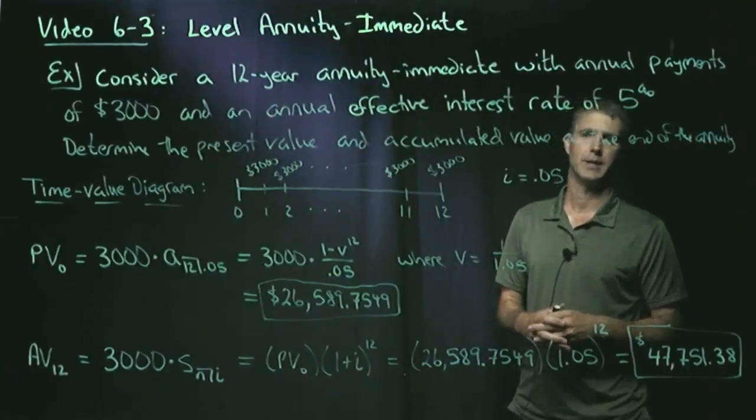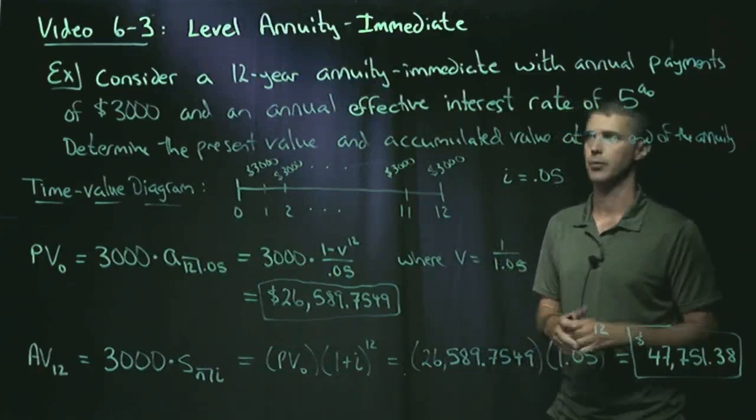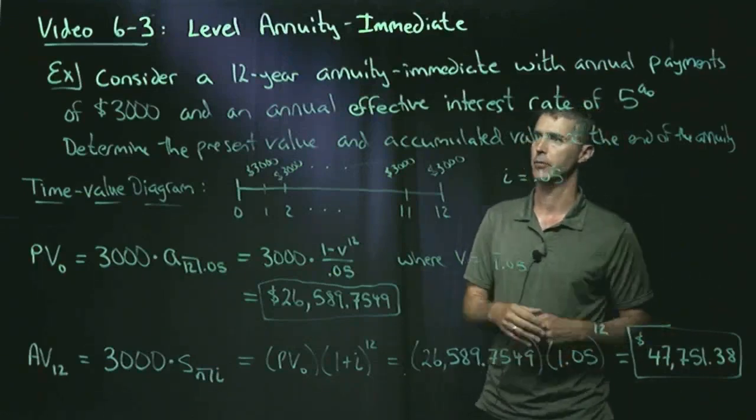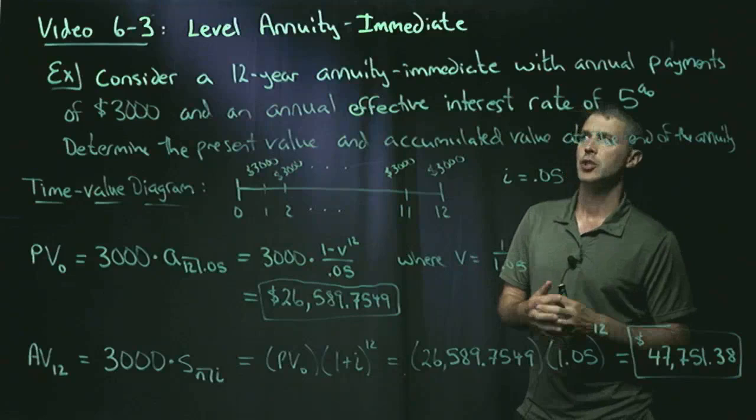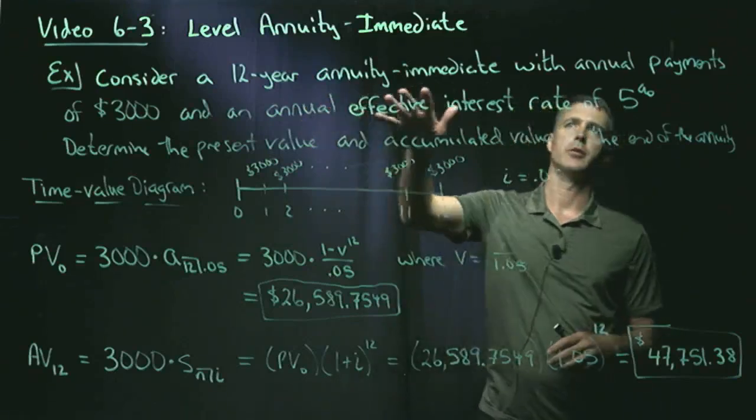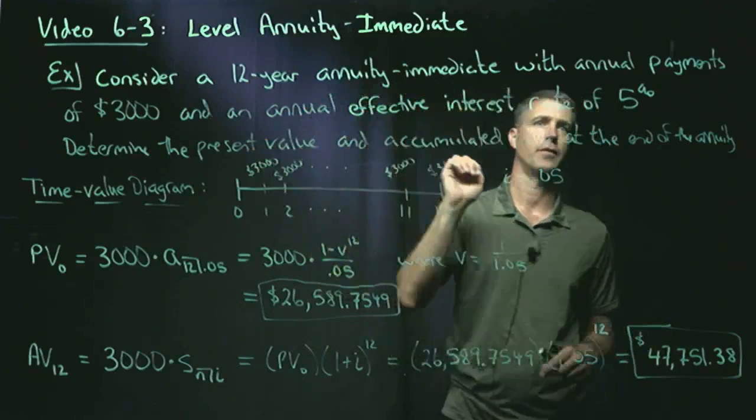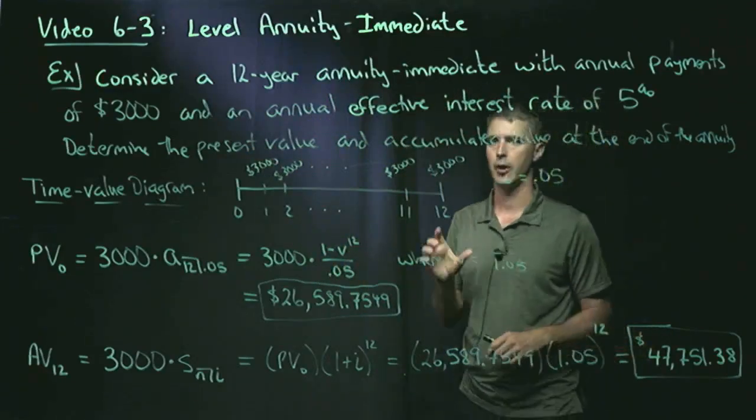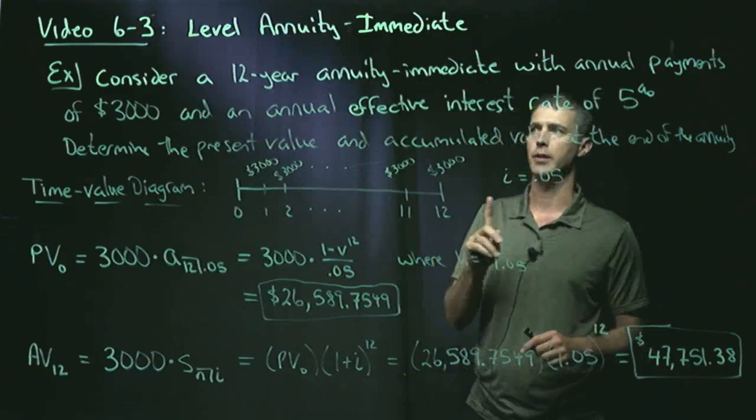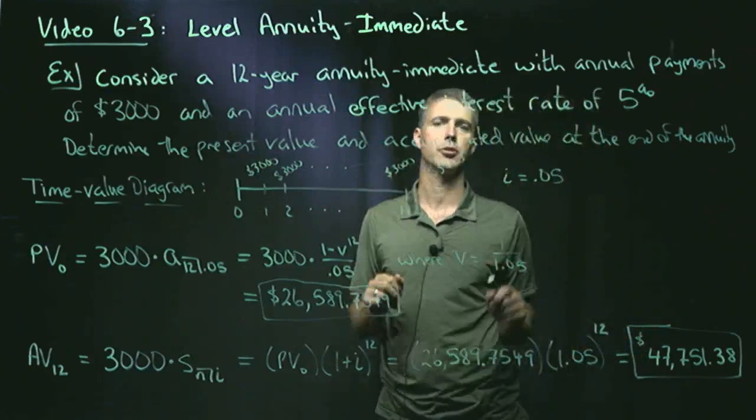So now we're going to do a very basic level annuity immediate example. So feel free to pause and copy before you listen to me. So in this example, we have a 12-year annuity immediate with annual payments of $3,000 and an annual effective interest rate of 5%. So our period of time is going to be one year, and we have the exact interest rate we need,